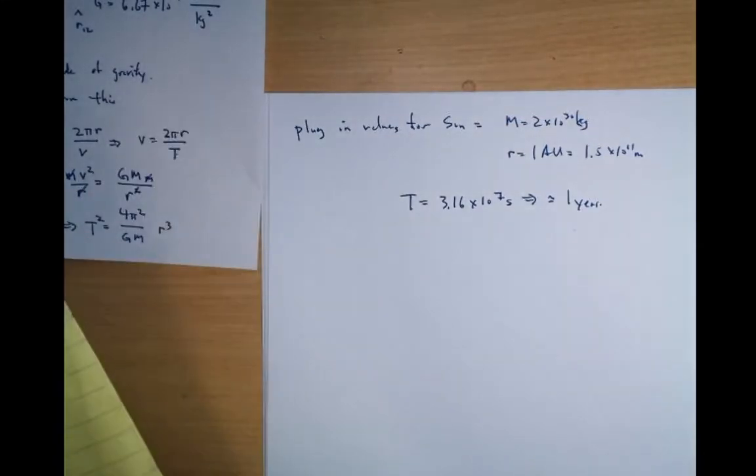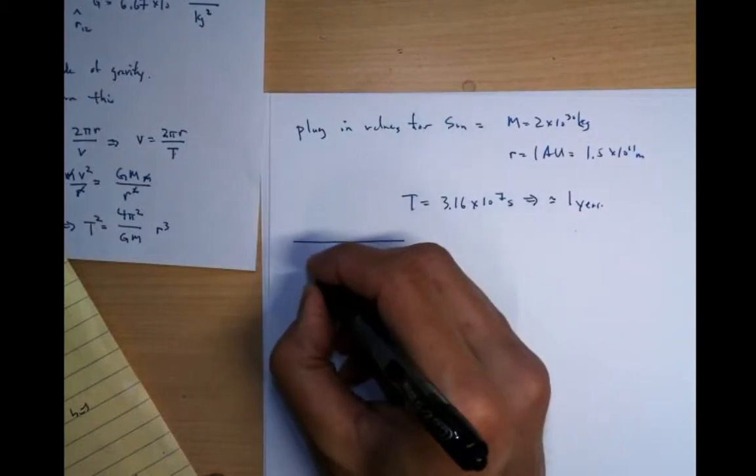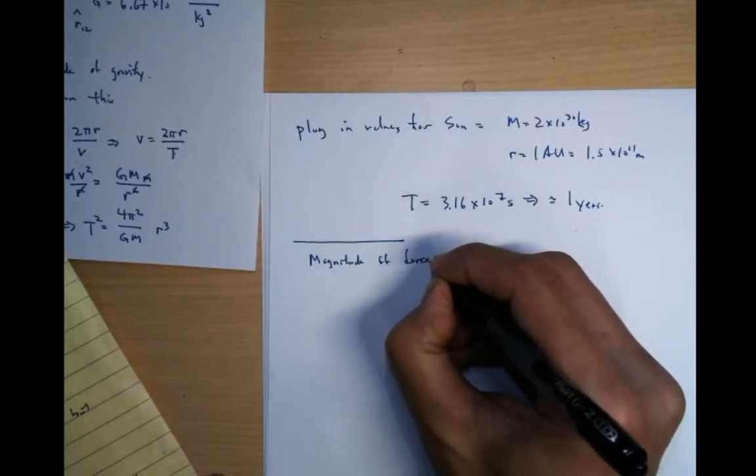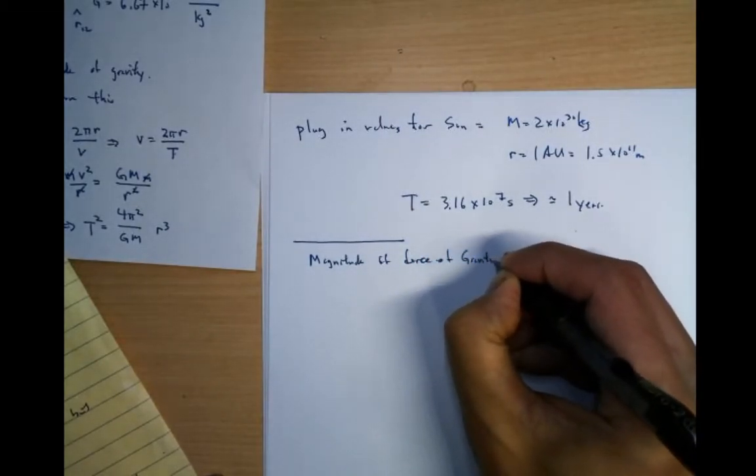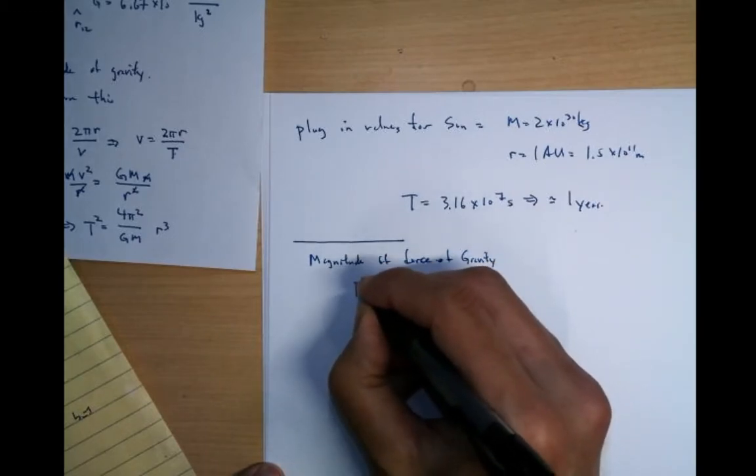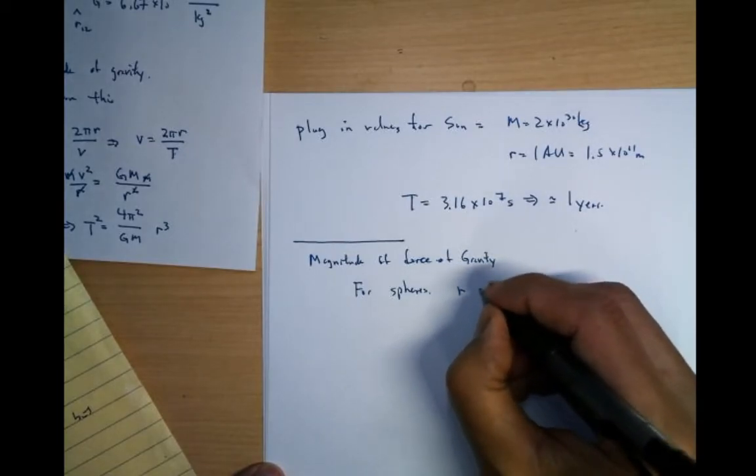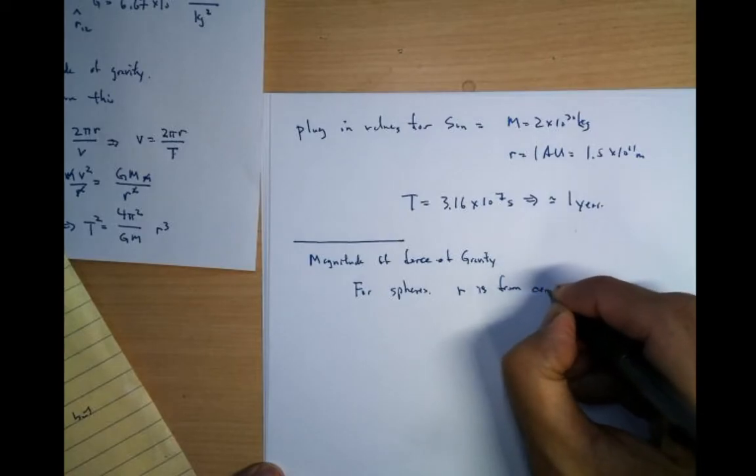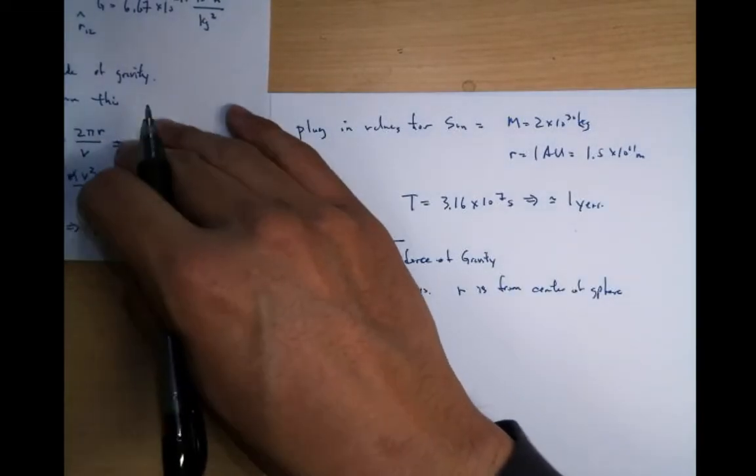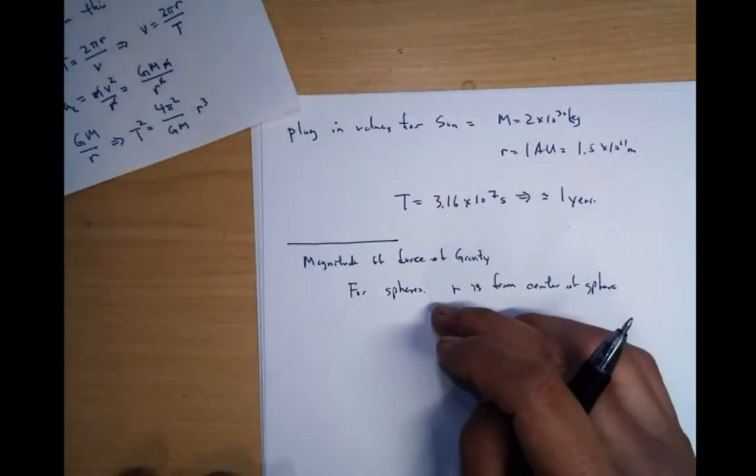Now, I'm going to close up with some discussion of basically the magnitude of the force of gravity for spheres. So the thing is this, this factor r here in the force of gravity, if you have a round object, you got to figure out what r is. That's always the standard for a sphere.